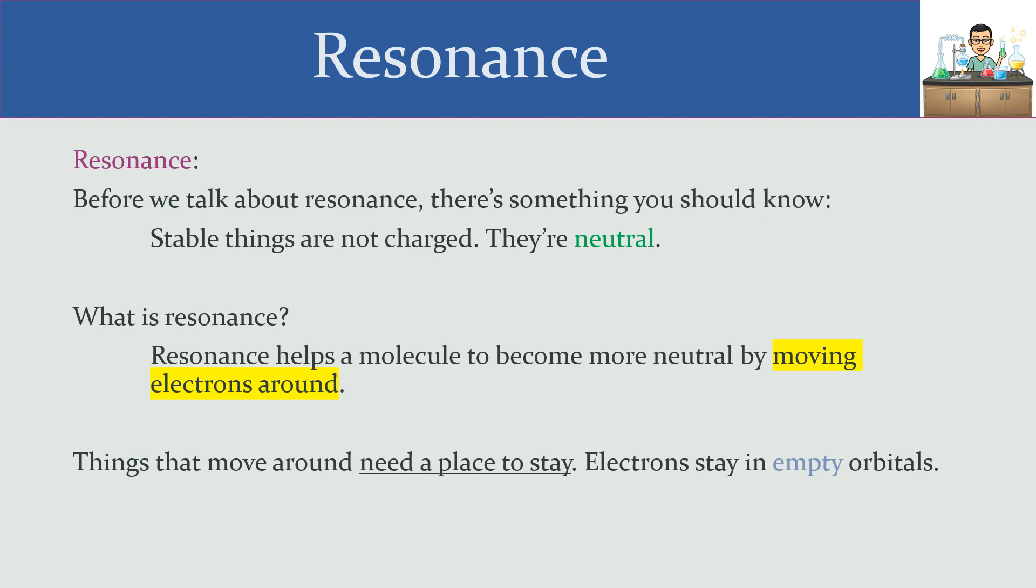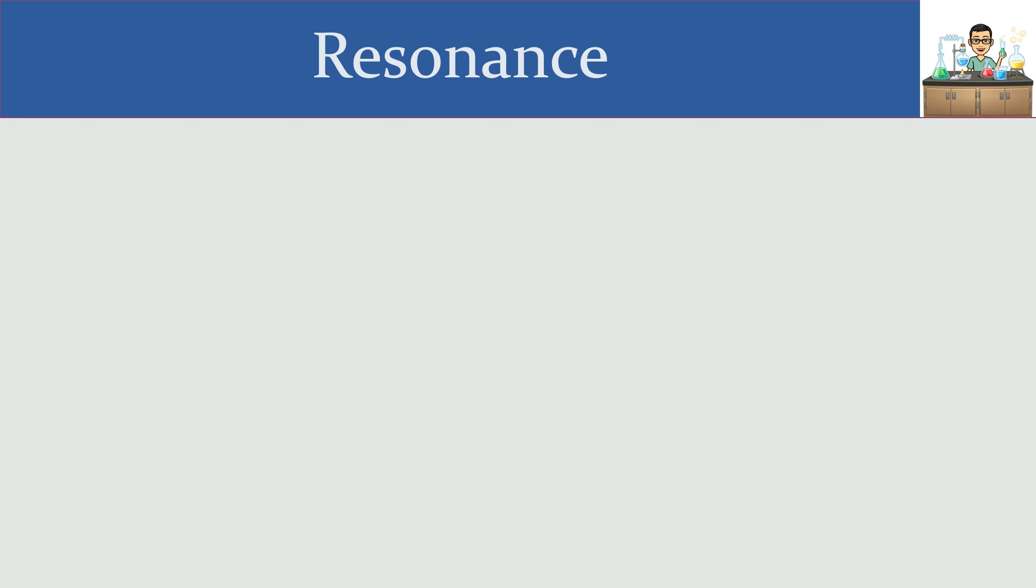When people move from one part of town to the other, they need a place to stay. If you're going to move electrons around to stabilize your molecule, you need a place for them to stay. The hotel room for electrons is an empty orbital. Electrons stay in empty orbitals. If you don't have an empty orbital for them, they're not going to move around because electrons repel each other.